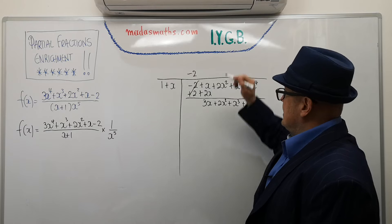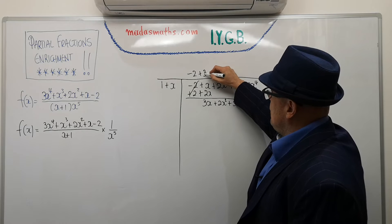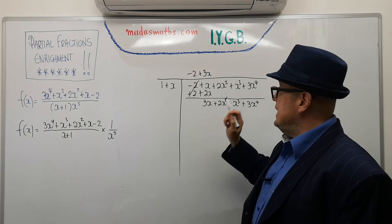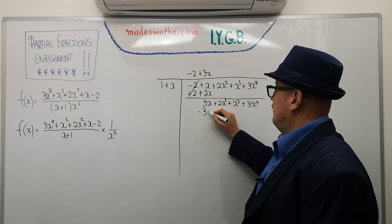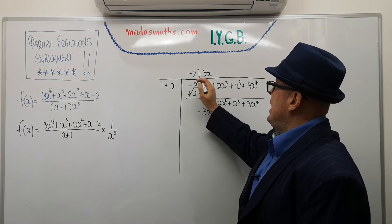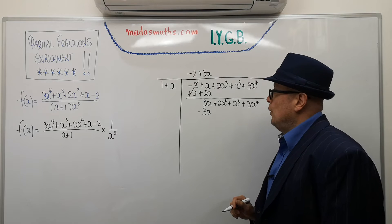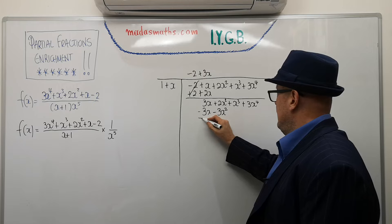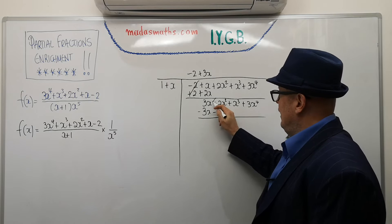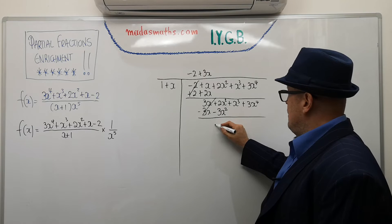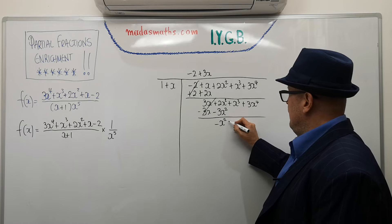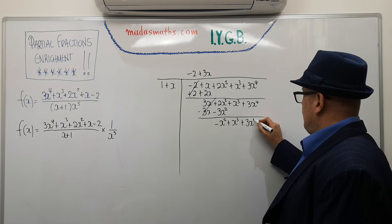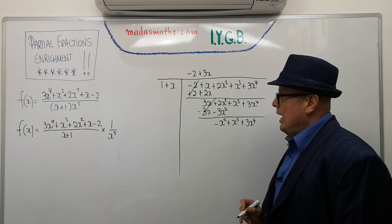1 into 3x. It goes 3x times. 1 times 3x is 3x minus 3x. 3x times x is 3x squared positive minus 3x squared. Quite crazy, isn't it, at the moment? Cancel this. And now I'm getting a minus x squared plus x cubed plus 3x to the power of 4. Okay. I'll continue.